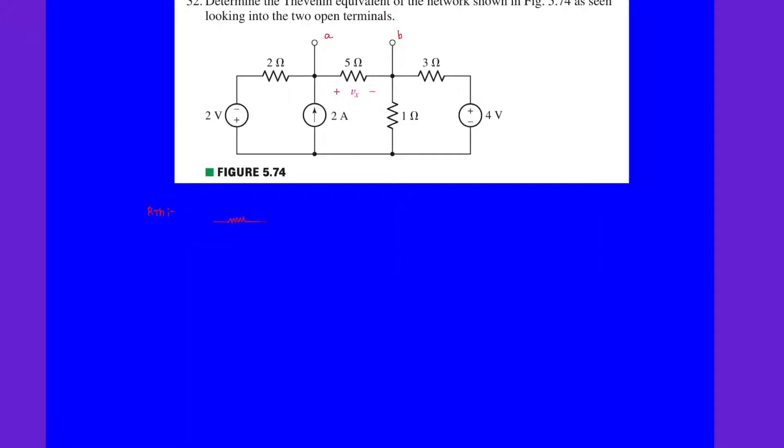By doing that, this is short. This is the 2 ohm resistance. These are the terminals A and B. This is the 1 ohm resistor.